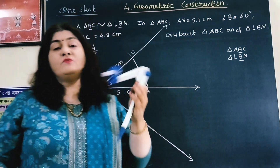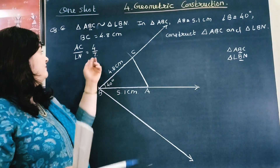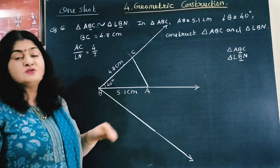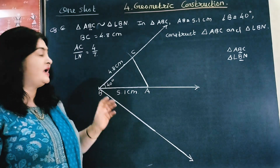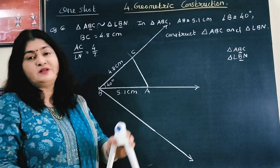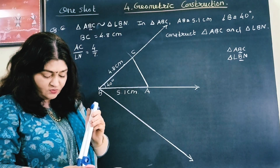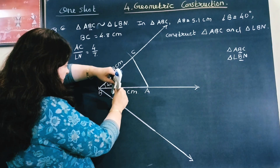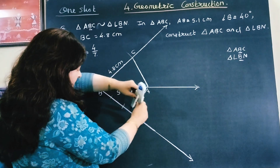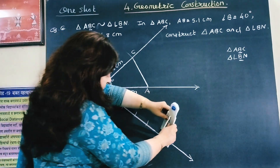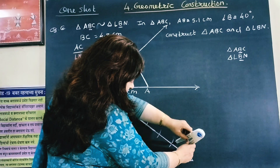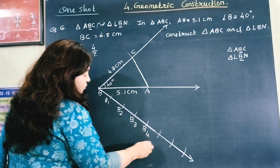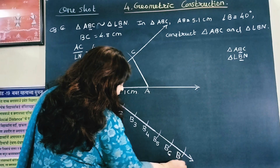Generally take about 1.5 cm on compass and draw 7 equal arcs on this ray, because 4 is to 7 is given and 7 is the larger number. Taking approximately 1.5 cm on compass, draw and count: 1, 2, 3, 4, 5, 6, 7. Label these points B1, B2, B3, B4, B5, B6, B7.